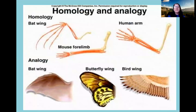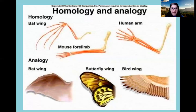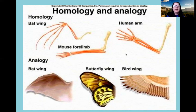Remember there is a difference between homology and analogy. Homology is when structures have the same structure but different functions — same structure, different function. Analogy is when structures have the same function but different structure — same function, different structure. So the bat wing, butterfly wing, and bird wing have the same function but different structure: that's analogy. Homology is when they have the same structure but different function.